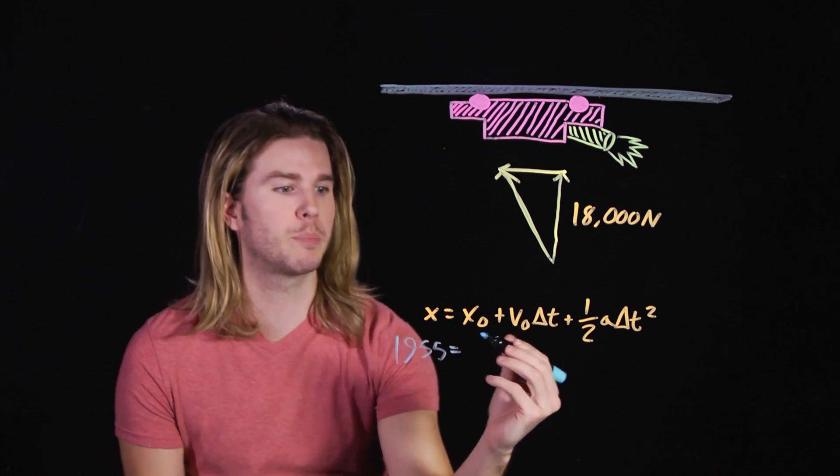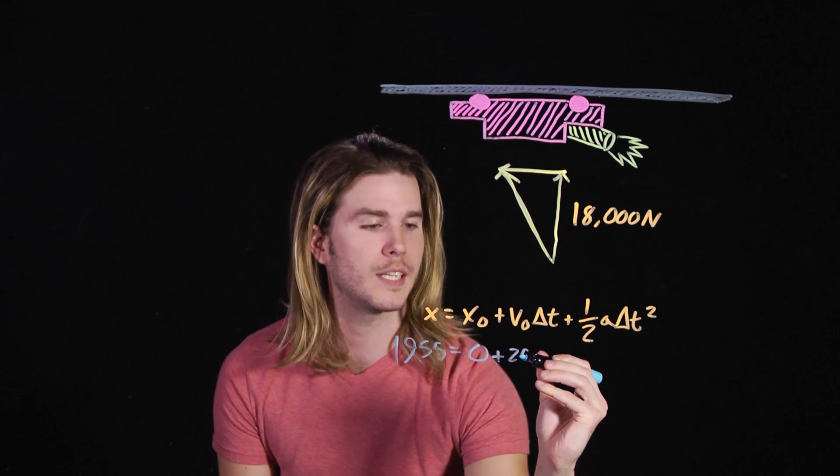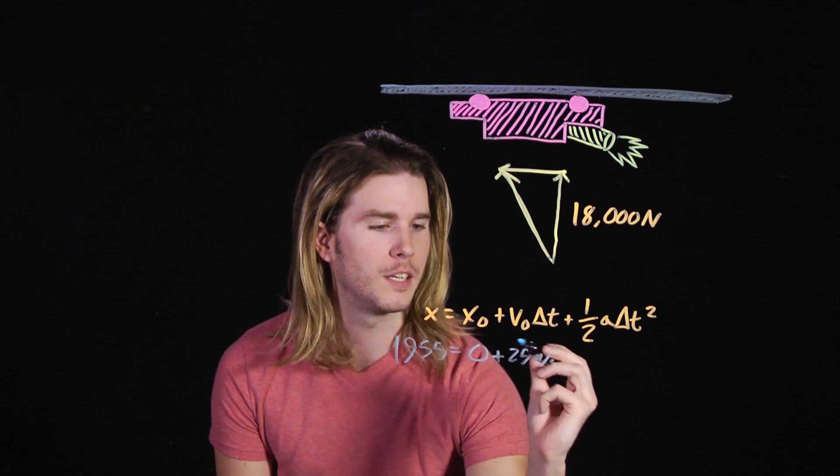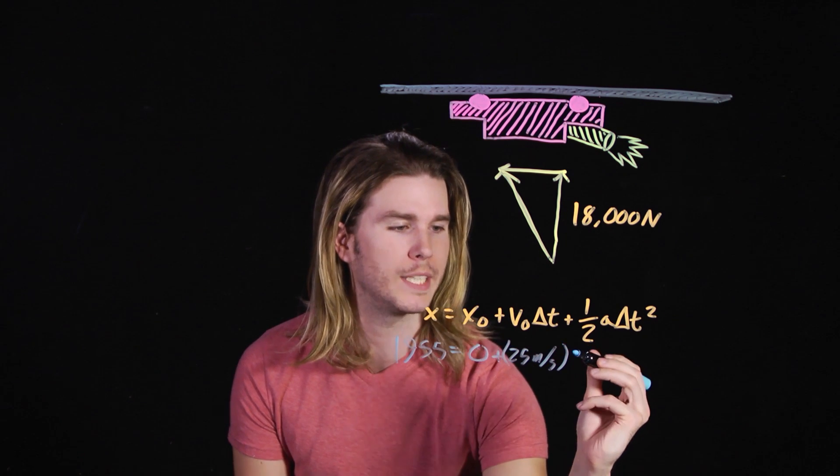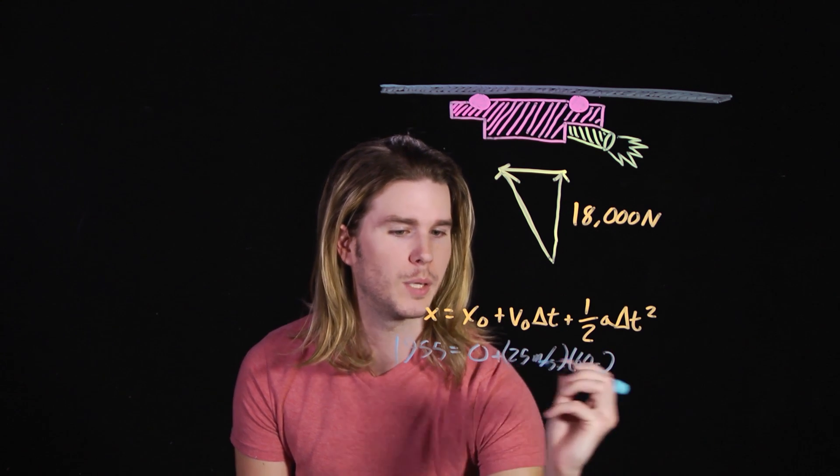So let's plug in what we know. We know that the car traveled 1,955 meters. It started from, let's say, position zero. It's initially going, let's say, highway speeds or 25 meters per second, multiplied by how quickly it did it, times 60 seconds. This is becoming a little unwieldy, but stay with me.